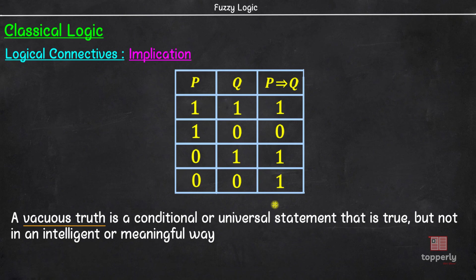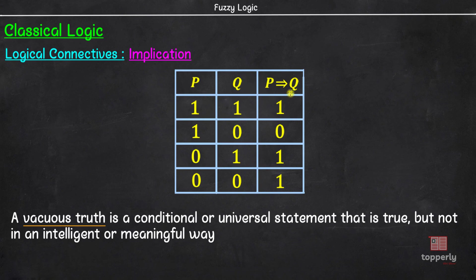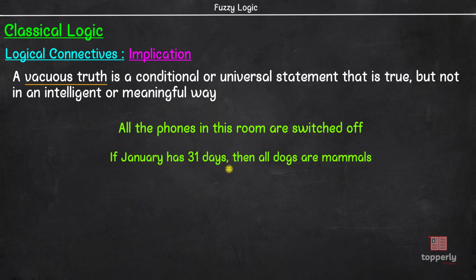Another way to look at this is through the statement 'innocent until proven guilty.' This is taken as a statement that is considered true until it is proven false. Since we cannot call the statement P implies Q as false when P is false, our only alternative is to call it true, and hence we get a truth table like this. It is very important to note and remember that a false hypothesis can mean anything. Consider one more implication: 'If January has 31 days, then all dogs are mammals.' We know that there is no causal relation between the days of the month and dogs being mammals. However, since both the hypothesis and conclusion of this statement are true, this implication is indeed true as per our truth table. Basically, the point I am trying to convey here is that the use of implication in logic is very different from its use in everyday language.